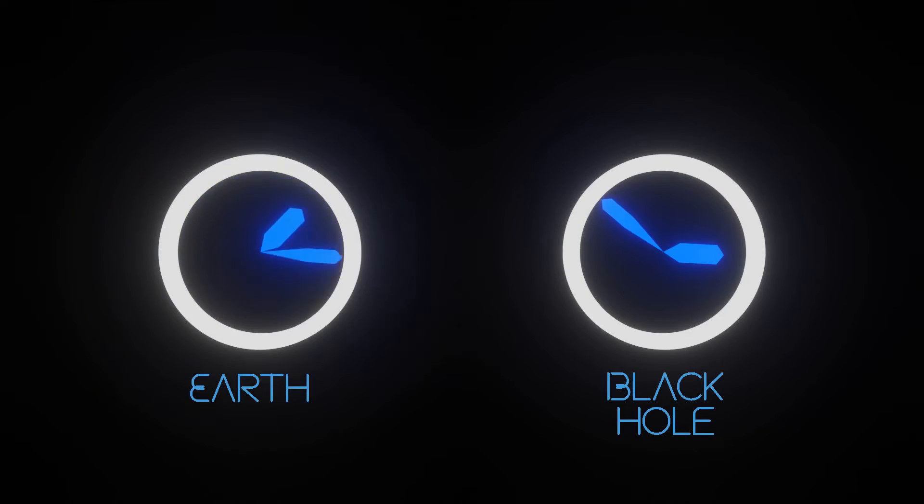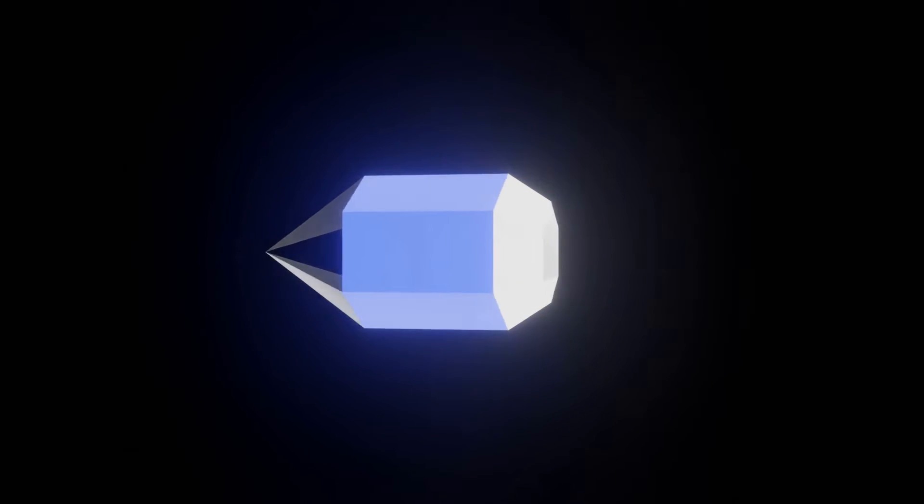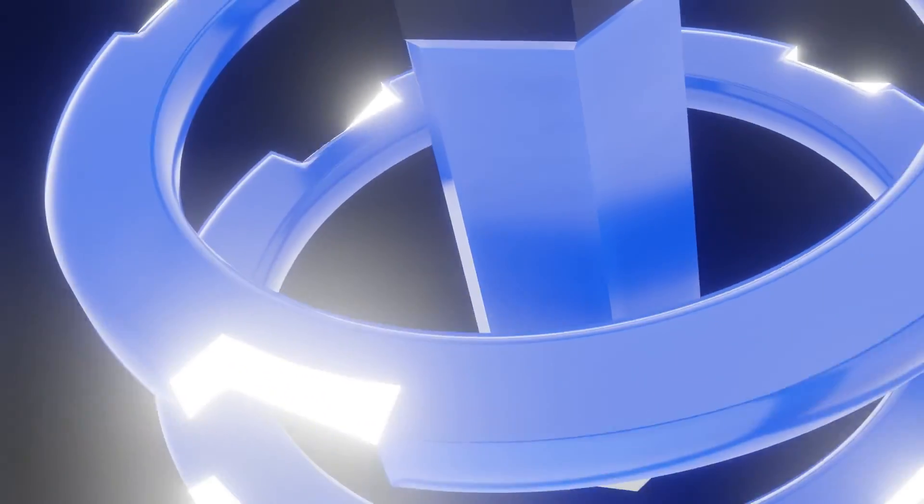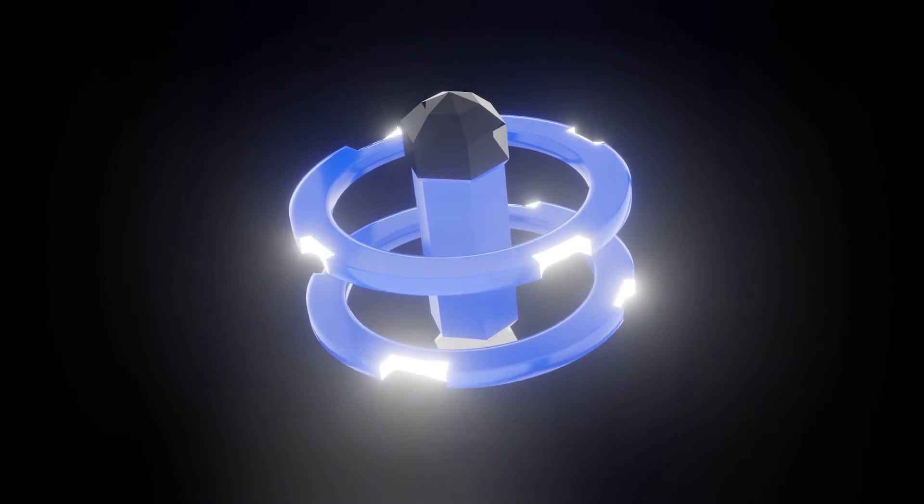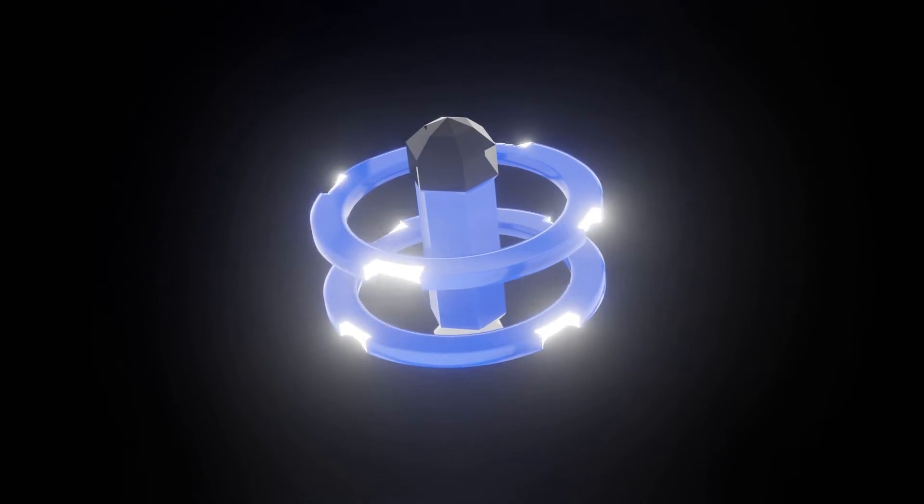In the space around black holes, time dilation is far more noticeable. To see exactly how, let's send a robot probe that's durable enough to withstand the gravitational might of a black hole. We will be watching it from my space station, much farther away from the black hole. Pay close attention to the rotating rings to help give you a sense of time.